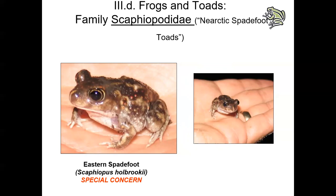Spadefoot toads eat a variety of insects including termites, ants, crickets, caterpillars, spiders, centipedes, millipedes, earthworms, and moss. They're found throughout North America, Europe, Asia, and Africa. In Indiana we have a single species — the Eastern Spadefoot — which is a species of special concern, largely due to restricted habitat requirements. They need sandy soil that facilitates their burrowing backward into the ground, and are not found throughout the state.